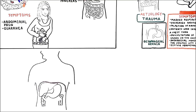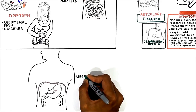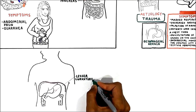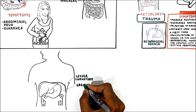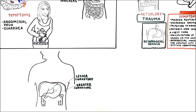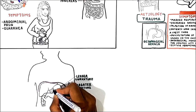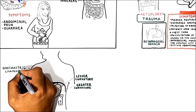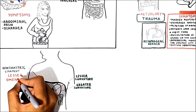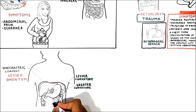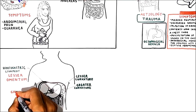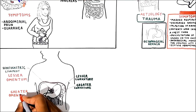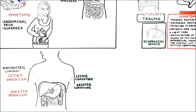The stomach has two curvatures. The concave medial border of the stomach is called the lesser curvature. The convex lateral border is called the greater curvature. The lesser curvature helps the stomach attach to the liver via the hepatogastric ligament, which forms what is called the lesser omentum. The greater curvature has the greater omentum, which runs down over the small intestine and then folds back on itself and essentially attaches to the transverse colon to hold it in place.